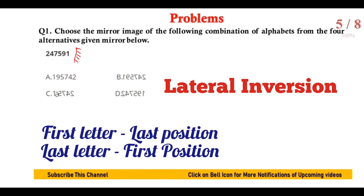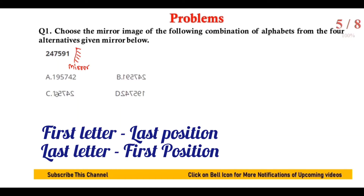The mirror image is obtained based on the principle of lateral inversion — the size of the object will not change, only the direction will change, perpendicular to the mirror surface. The first letter will be seen at the last position and the last letter will be seen at the first position. So the reflected image is built accordingly.